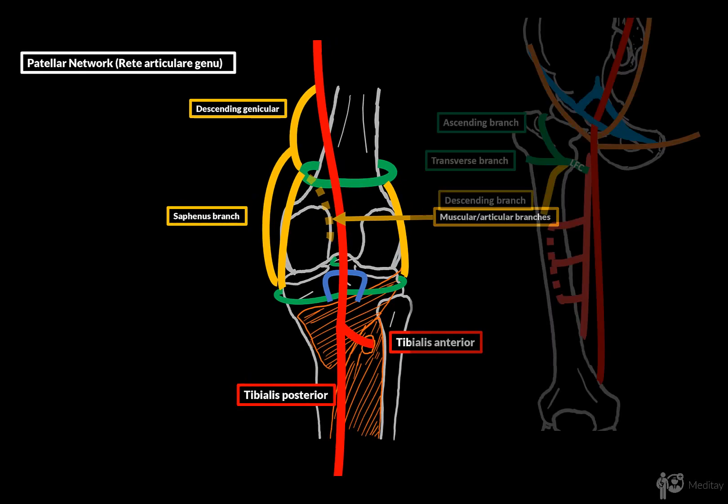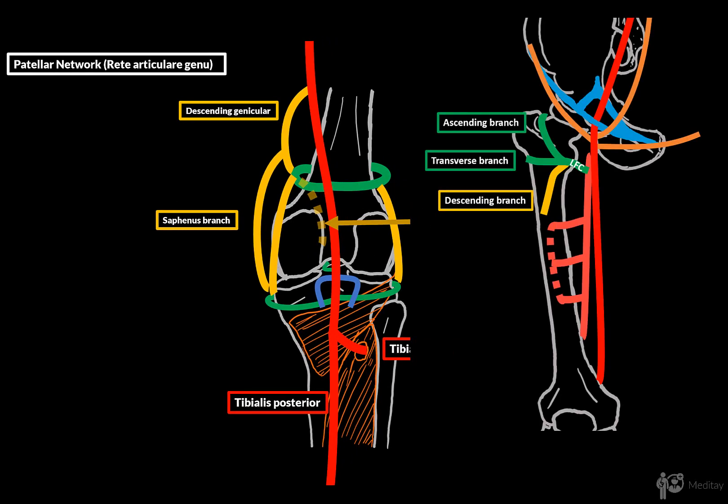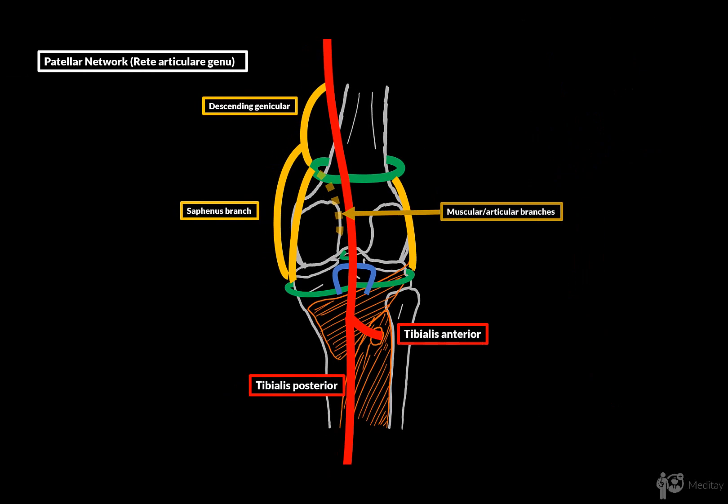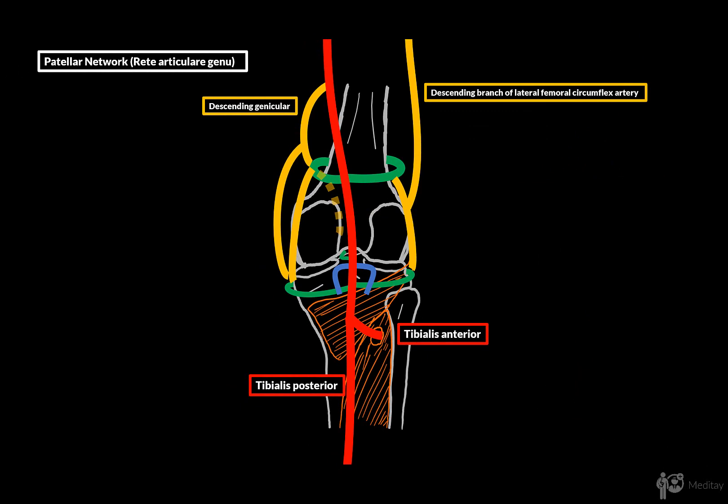Remember that the lateral femoral circumflex artery divides into three branches: the ascending, transverse, and the descending branch. The descending branch of the lateral femoral circumflex artery will go down and contribute to the patellar network on the lateral side.